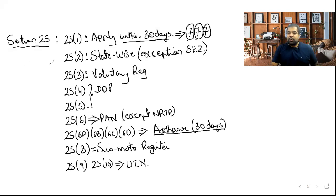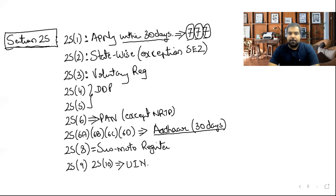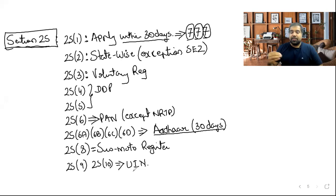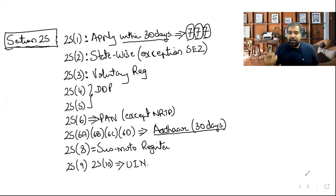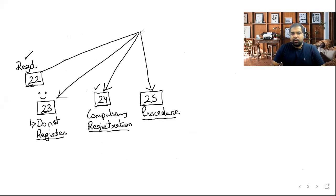Section 25 is done — very important section, especially the effective date concept. One more point: when registering, you designate a principal place of business and additional places of business in each state; at CA Final, a job worker can be designated as an additional place of business.